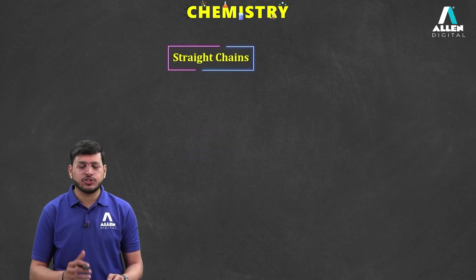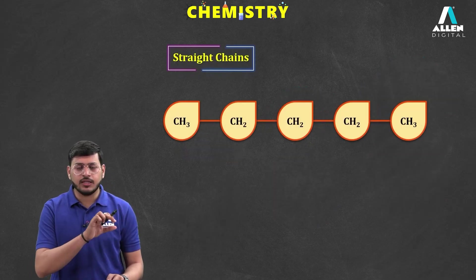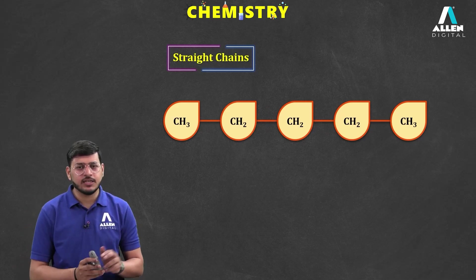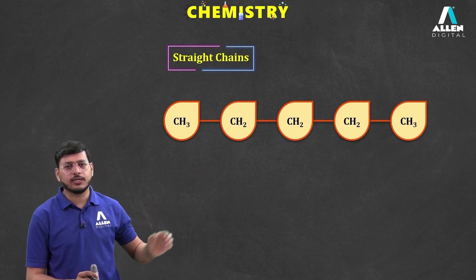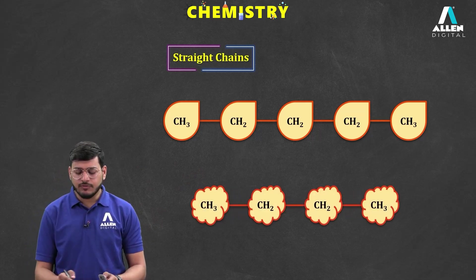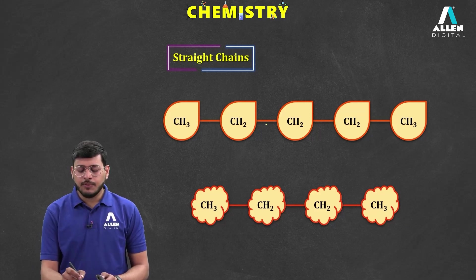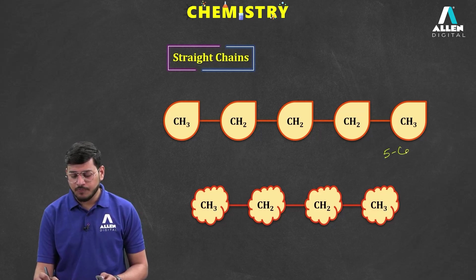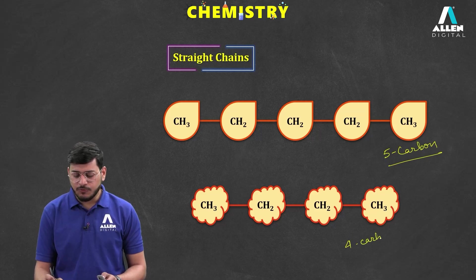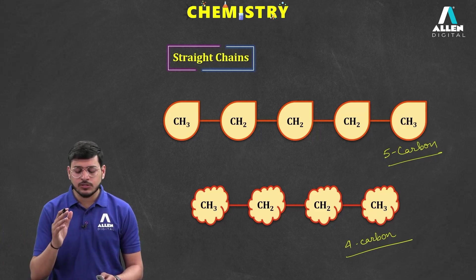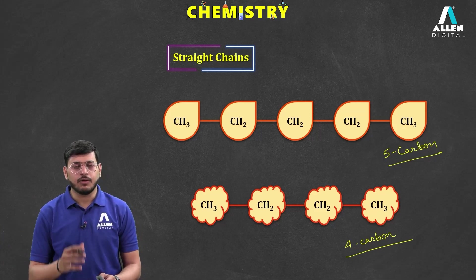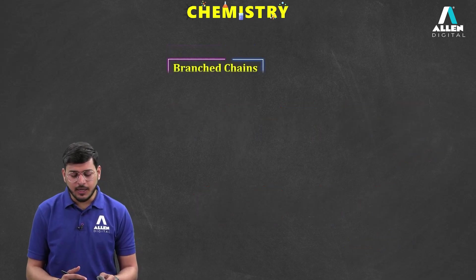For example, in a straight chain, carbon atoms are connected linearly — a chain of five carbon atoms, or it could be four, six, seven, eight, nine, ten — any number of carbons. Maximum catenation is shown by carbon, so the chain can be of any length, and each different chain length forms a different compound.